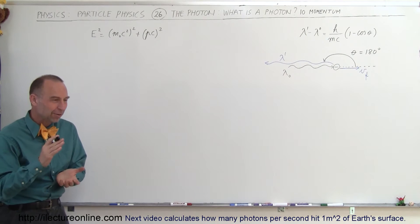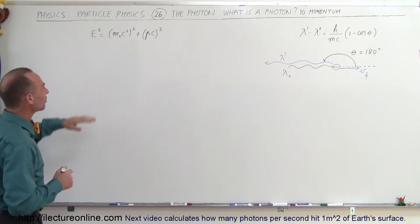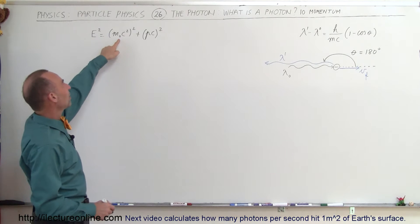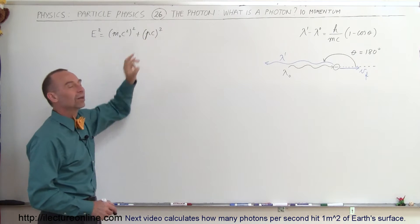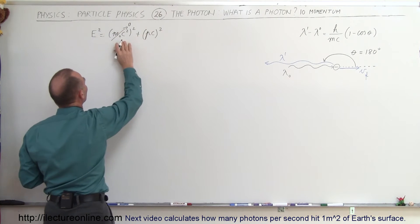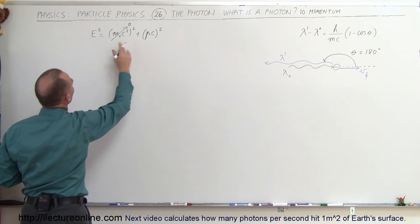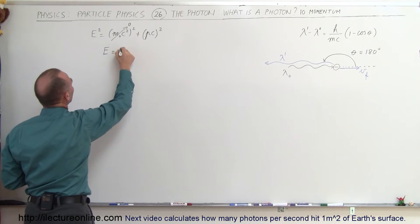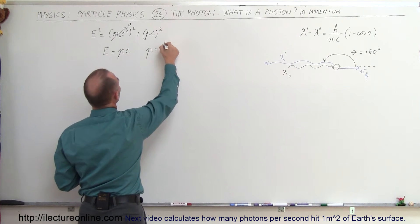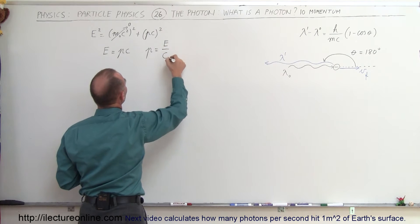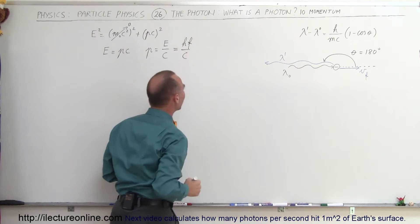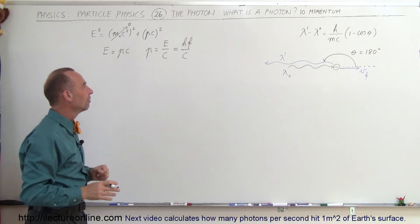We do know that a photon has momentum even though it doesn't have any mass. Going back to the original equation of relativity, the total energy of a particle is equal to its rest mass energy plus its momentum times the speed of light, quantity squared. In the case of a photon, it does not have any mass, so that portion goes to zero. Taking the square root of both sides, the energy of a photon equals momentum times the speed of light, which means the momentum of a photon equals its energy divided by the speed of light. Since the energy of a photon equals Planck's constant times the frequency, we can say p = hf/c.